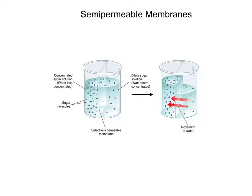When we look at semi-permeable membranes, we're talking about a membrane — a sheet that separates one side from the other — that allows some things to pass through but not others. This sheet, which could be made of any number of substances, allows water to pass through but not the sugar. The sugar molecules cannot pass through.